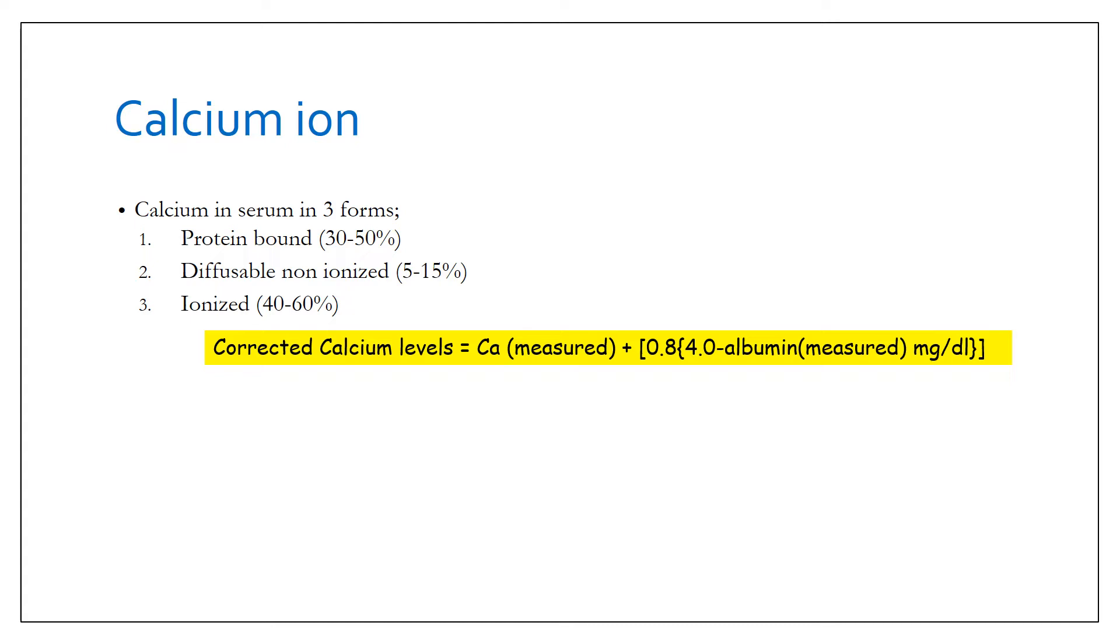Approximately 50% of it is albumin bound, so in that case you have to calculate the corrected calcium levels by this formula: corrected calcium equals calcium measured plus 0.8 times (4 minus albumin measured).